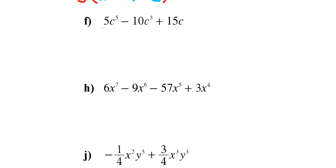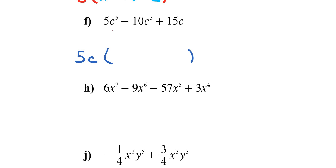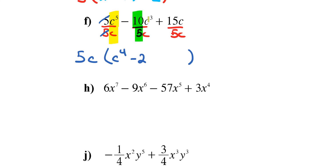For letter F with coefficients 5, 10, and 15, the biggest divisor is 5. For the variable C, the powers are 5, 3, and 1 — the smallest is 1, so the GCF is 5C. Dividing: 5 ÷ 5 = 1 and C⁵ ÷ C = C⁴; then 10 ÷ 5 = 2 and C³ ÷ C = C²; then 15 ÷ 5 = 3 and C's cancel. Final answer: 5C(C⁴ - 2C² + 3).